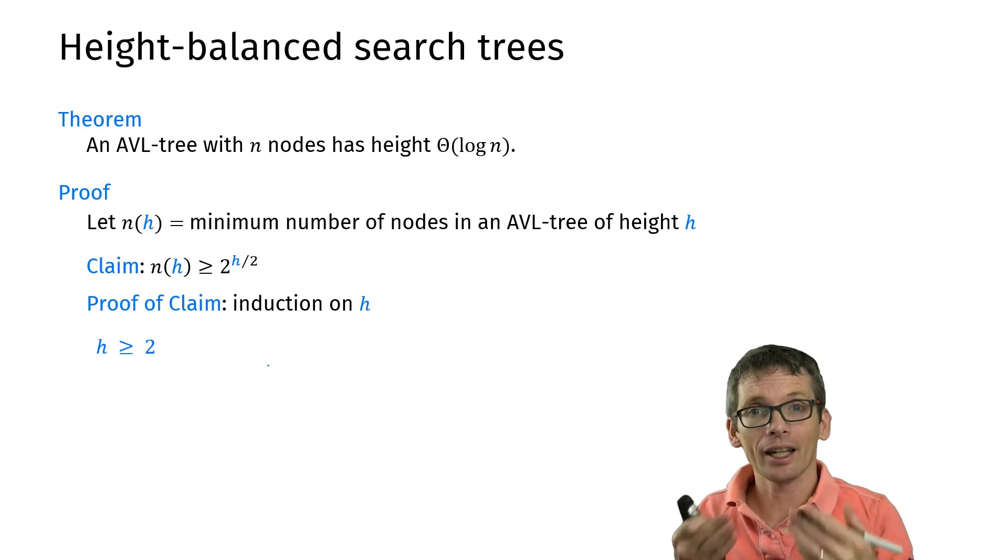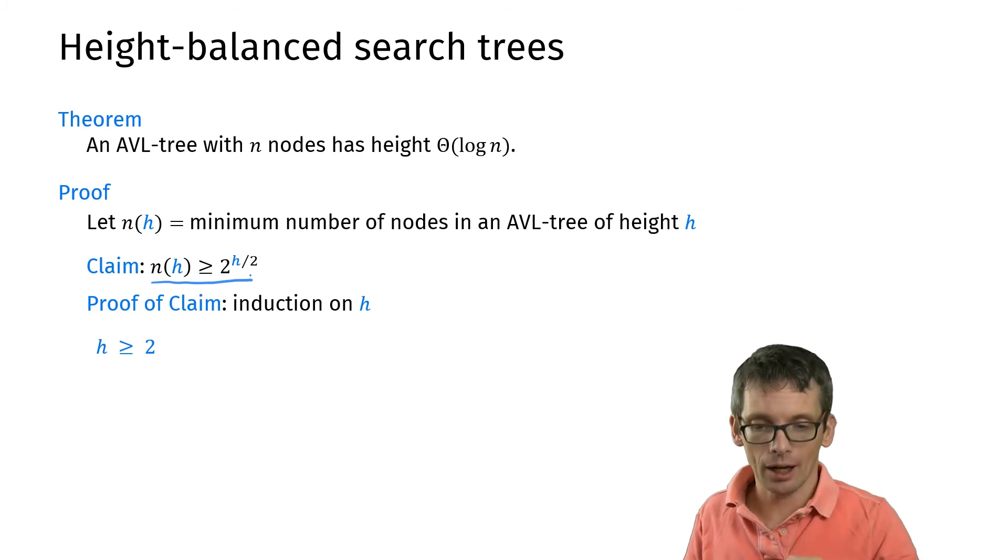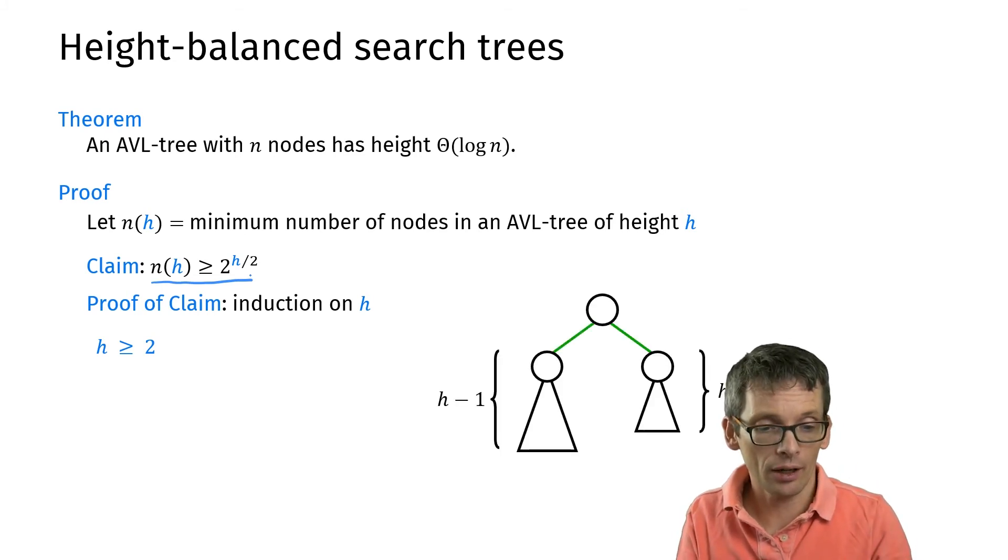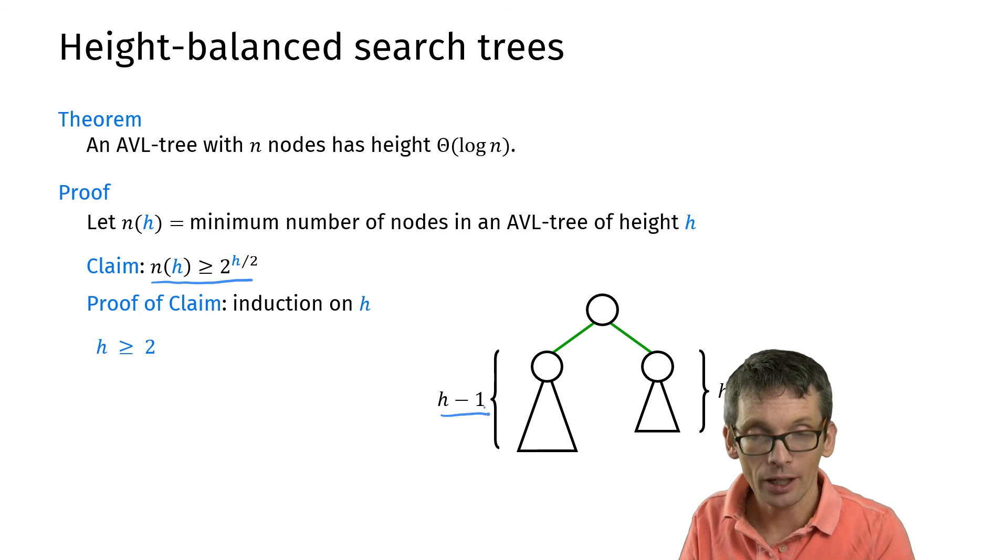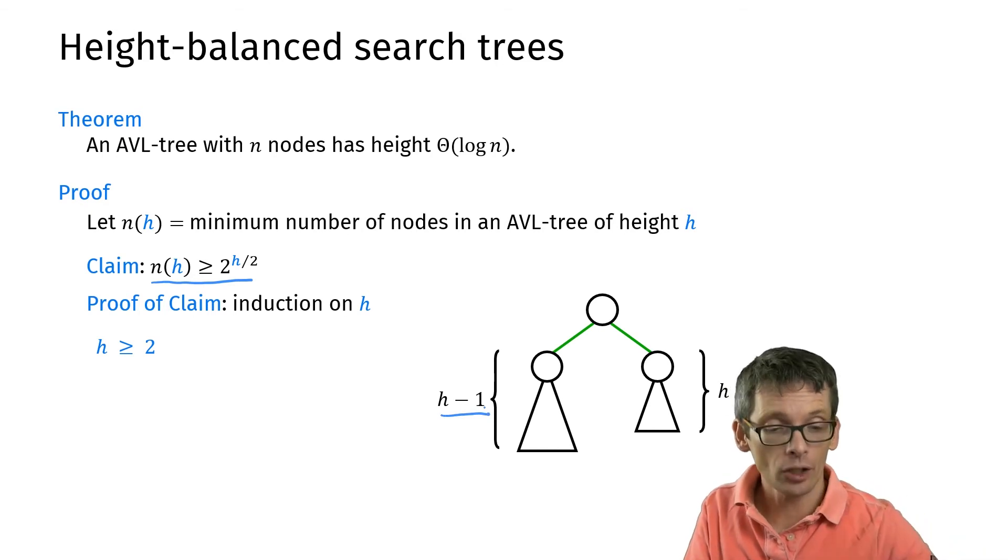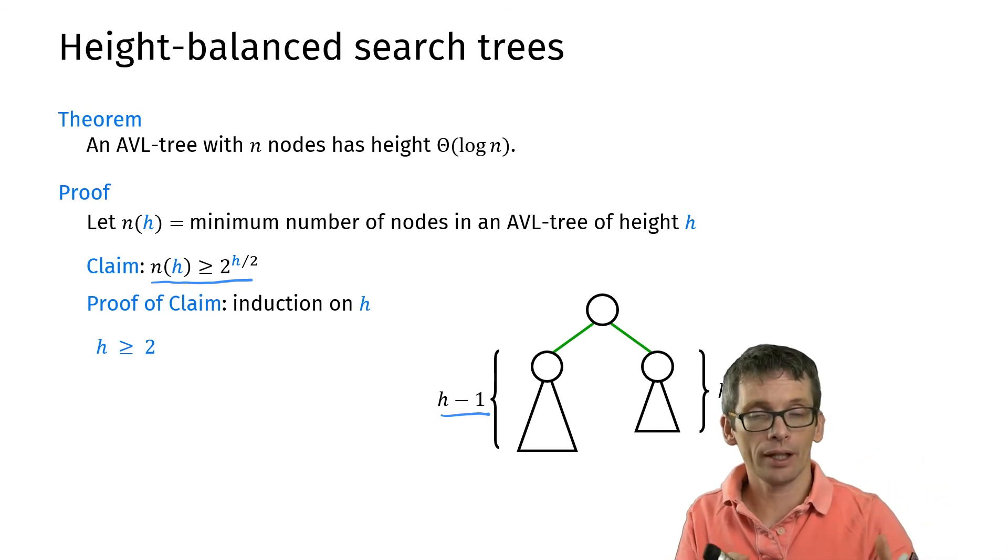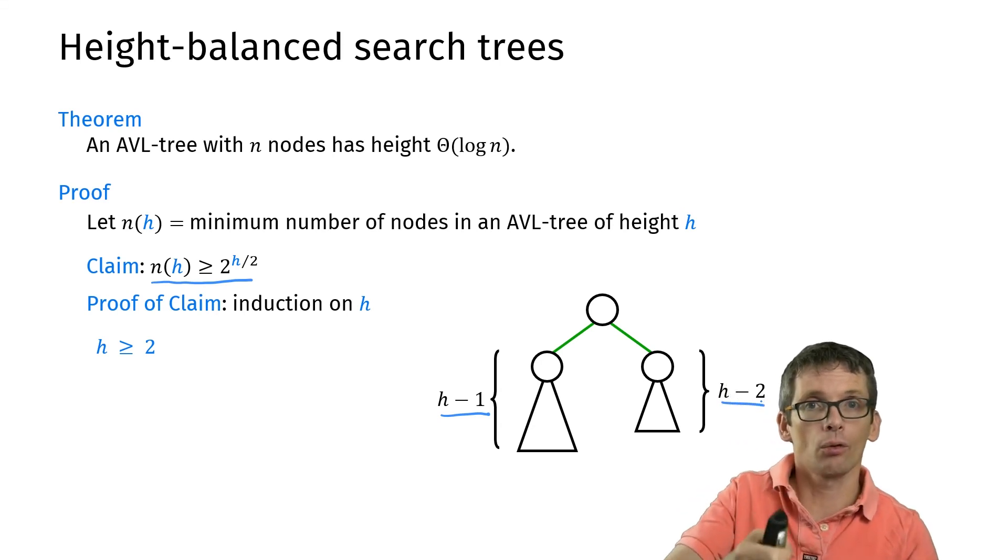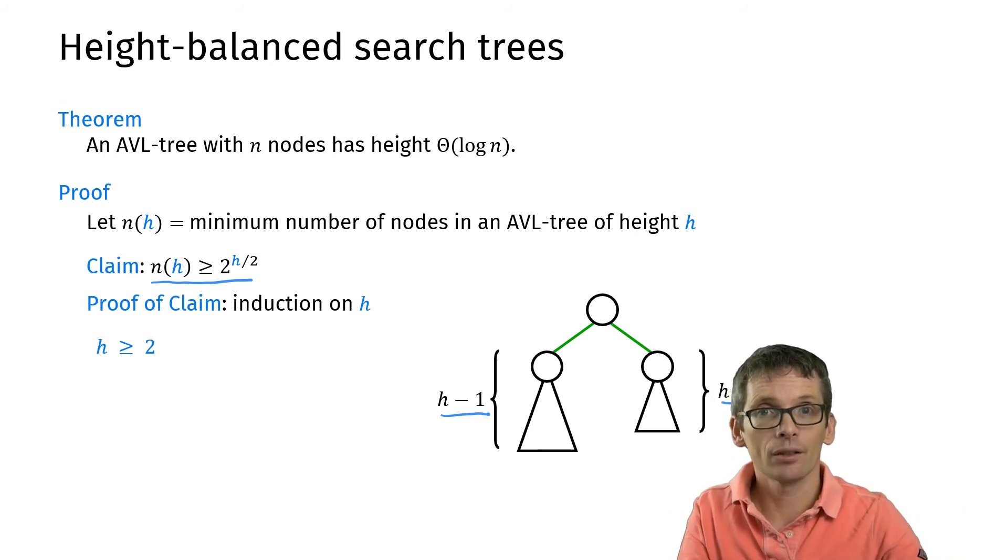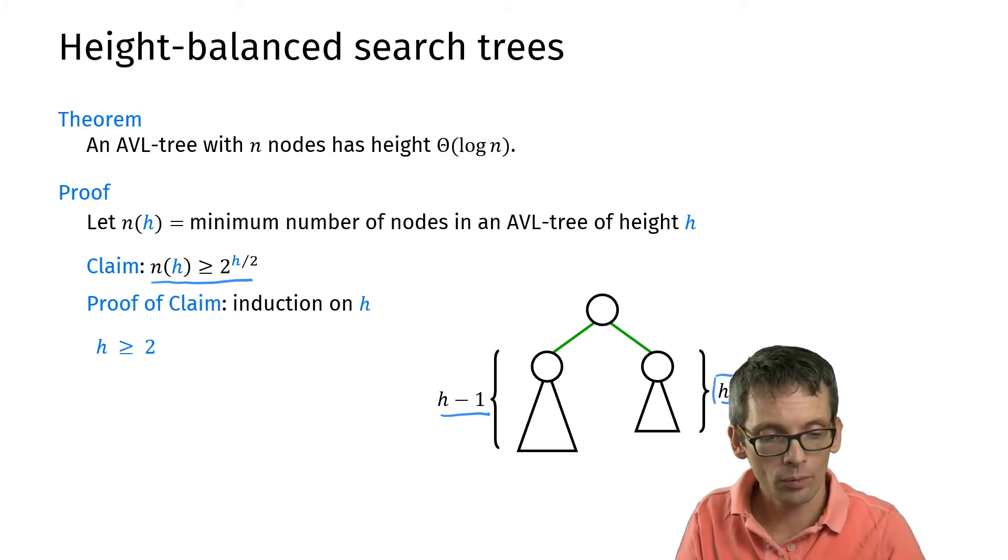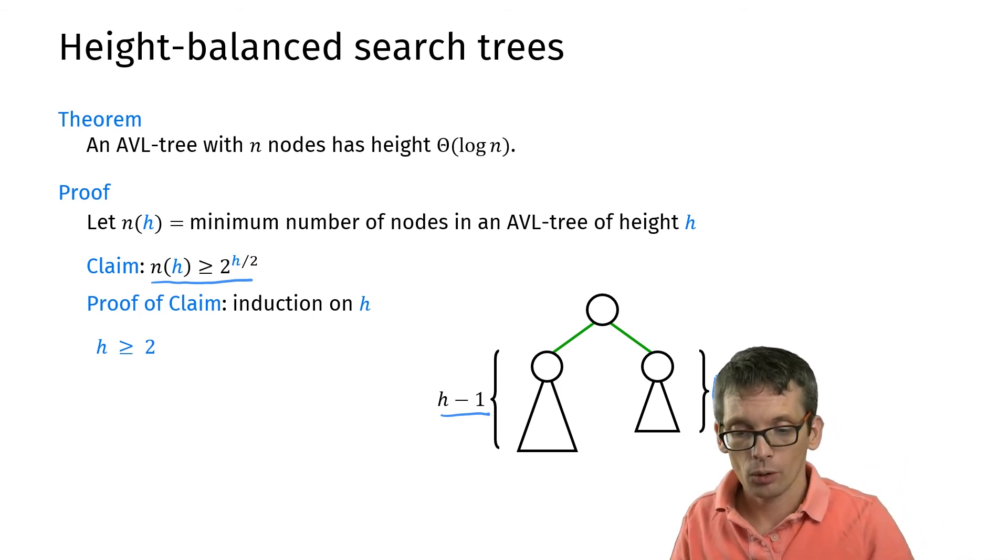Let's do the induction step. So I have a height h, it is at least 2, and now I want to prove that n(h) is at least 2^(h/2). Let's have a look at such an AVL tree. So here we have an AVL tree of height h. What does it mean? It means that one of the two subtrees will have height h - 1 because I need that to overall get height h, and the other one will have height h - 1 or h - 2 because it's an AVL tree so they differ at most by one and it can't be h because overall height is h. Now I want to know what is the minimum number of nodes in such a tree, so then I can assume that this is actually h - 2 because that just makes the number of nodes smaller and I want to have a lower bound.